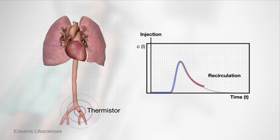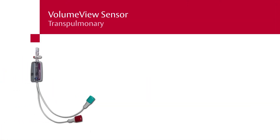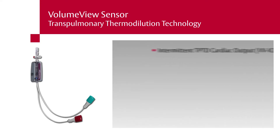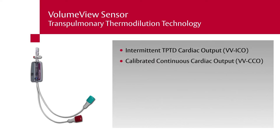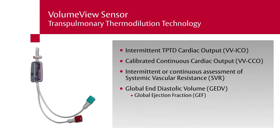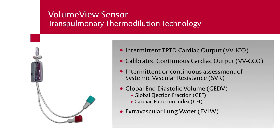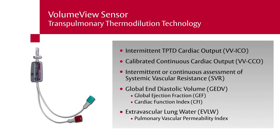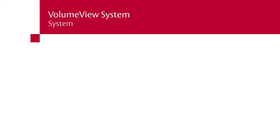Transpulmonary thermodilution with the volume view sensor allows for the measurement and derived calculations of the elements that affect oxygen delivery through intermittent transpulmonary thermodilution cardiac output, calibrated continuous cardiac output, intermittent or continuous assessment of systemic vascular resistance, global end-diastolic volume, global ejection fraction, as well as cardiac function index. In addition, extravascular lung water and pulmonary vascular permeability index can be used, which may affect oxygenation.